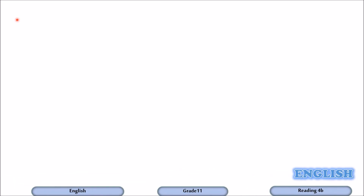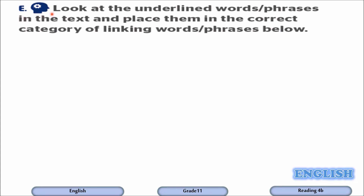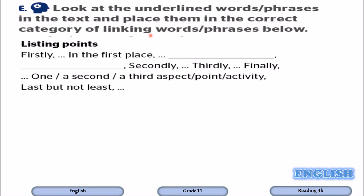Let's move to exercise E. In this exercise, you are going to go back to the text and underline words or phrases, then place them in the correct category of linking words. We have to categorize them according to their functions. Please pause the video and find these phrases or words.